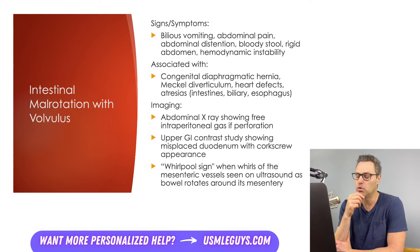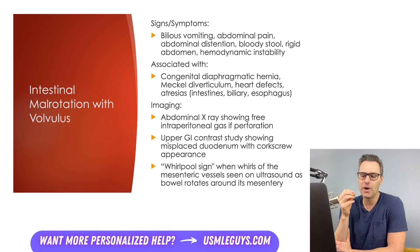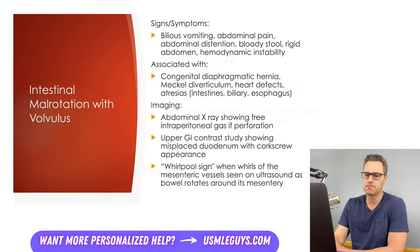On abdominal x-ray, free intraperitoneal gas will be visible if a perforation is present — in that case, the patient goes immediately to surgery without further imaging. If no free gas is seen, either an upper GI contrast study can be performed, which may show a misplaced duodenum with corkscrew appearance, or an ultrasound, which may identify the whirlpool sign — whirls of mesenteric vessels seen as the bowel rotates around its mesentery.